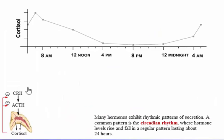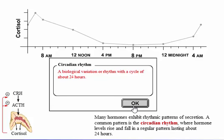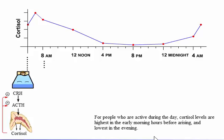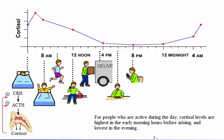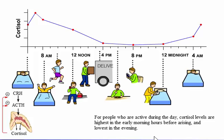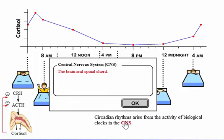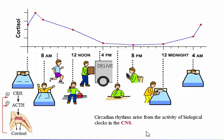Many hormones exhibit rhythmic patterns of secretion. A common pattern is the circadian rhythm, where hormone levels rise and fall in a regular pattern lasting about 24 hours. Cortisol, driven by CRH, has a built-in circadian rhythm that is synchronized with a 24-hour day by exposure to light. For people who are active during the day, cortisol levels are highest in the early morning hours before arising and lowest in the evening. Circadian rhythms arise from the activity of biological clocks in the CNS. They alter the set point for a hormone, and negative feedback systems maintain hormone levels around the established set points for a particular time of day.